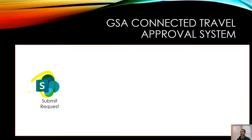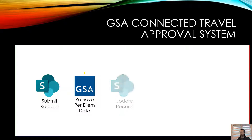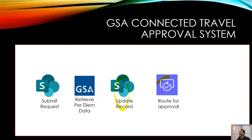Here's how it's going to work: someone will submit a request in a SharePoint list that we'll build. We're going to use a custom connector — which I'll show you how to import — to retrieve per diem data from GSA. We'll update the record, process an approval, and then save the approval status. Pretty straightforward.